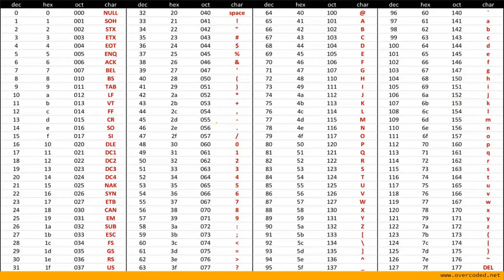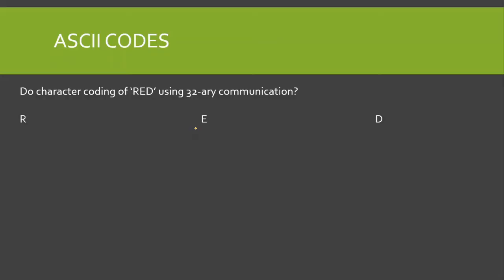We are given a question: do character coding of the word RED using 32-ary communication. By 32-ary communication, we are going to have a symbol of 5 bits, because 32 equals 2 power 5. So 5 bits constitute one symbol — 5 bits must equal 1 symbol.